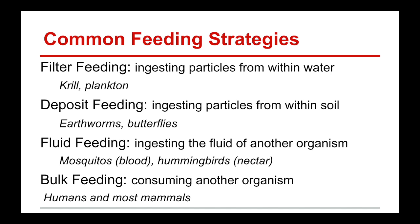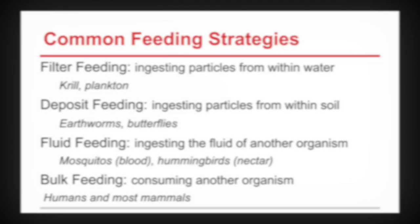Fluid feeding is ingesting the fluids of another organism, such as mosquitoes which consume blood, hummingbirds which consume nectar, or any other insect which consumes liquid from a tree. Bulk feeding is consuming the entirety of another organism — this is what humans and most mammals do: consumption of solid food.